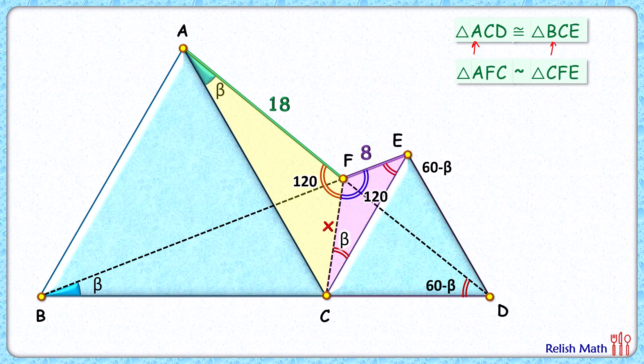As the triangles are similar, the ratio of corresponding sides will be equal. So here we can say that AF upon FC will equal CF upon FE. Putting the values: AF is 18, FC is x which we have to find, and FE is 8.